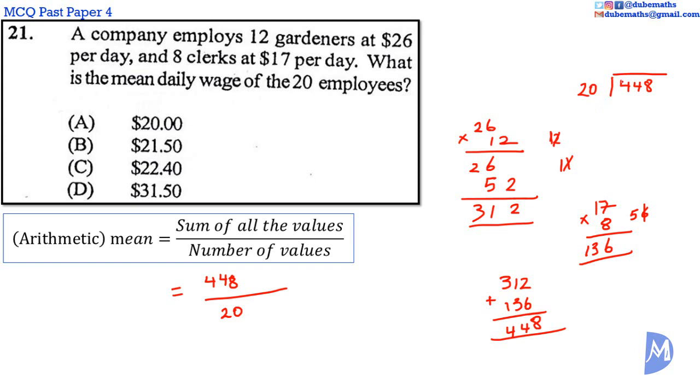20 into 4 is 0, 0 multiplied by 20 is 0, we have a remainder of 4. 20 into 44 is 2, 2 multiplied by 20 is 40, so we have 4 remaining.